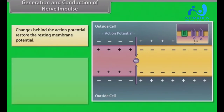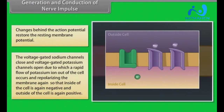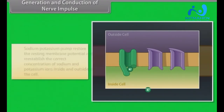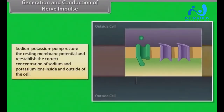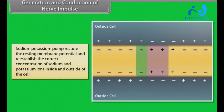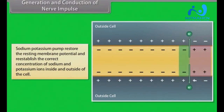Changes behind the action potential restore the resting membrane potential. The voltage-gated sodium channels close and voltage-gated potassium channels open, causing a rapid flow of potassium ions out of the cell and repolarizing the membrane so that the inside of the cell is again negative and the outside is again positive. The sodium-potassium pump then restores the resting membrane potential and re-establishes the correct concentration of sodium and potassium ions inside and outside of the cell.